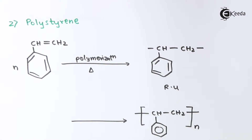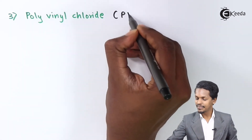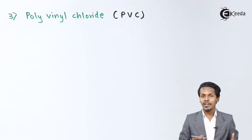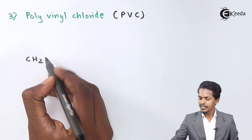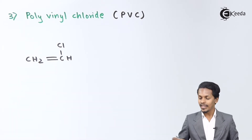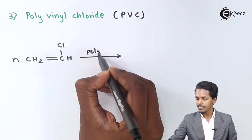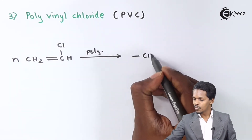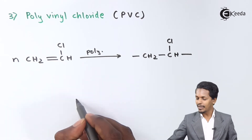Next is polyvinyl chloride, also commonly known as PVC. The monomer used to prepare PVC is CH2=CHCl, known as 1-chloroethene (vinyl chloride). We take n moles of this monomer and it undergoes polymerization, giving a repeating unit of –CH2–CHCl–.